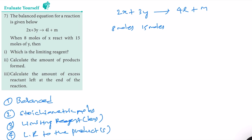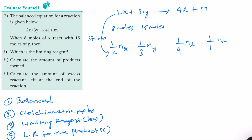Now let's write the stoichiometric moles. The method is to write one divided by the coefficient for each species: one-half times the moles of X, one-third times the moles of Y, one-fourth times the moles of L, and one-over-one times the moles of M. That is how we write the stoichiometric moles.